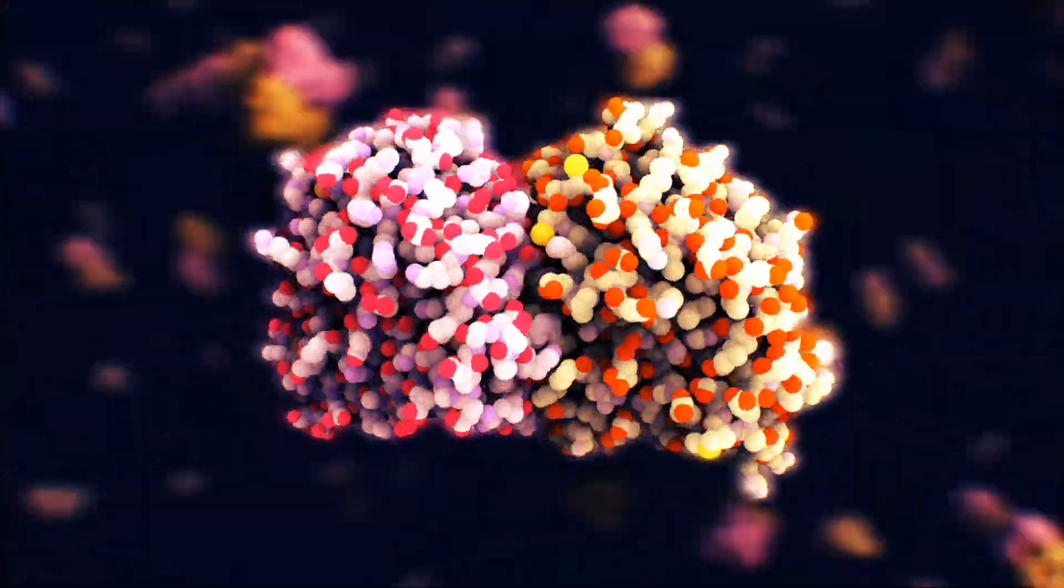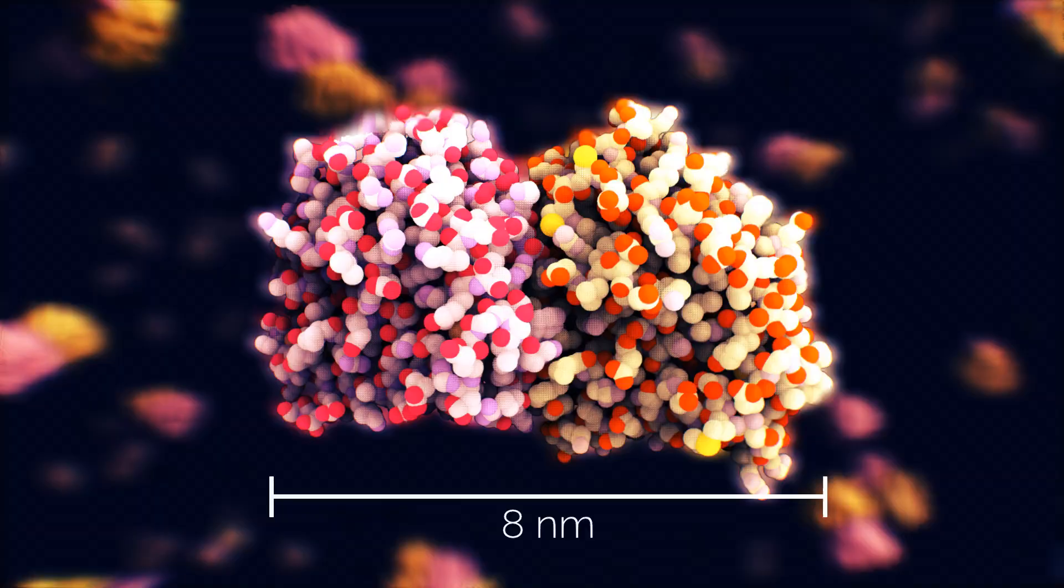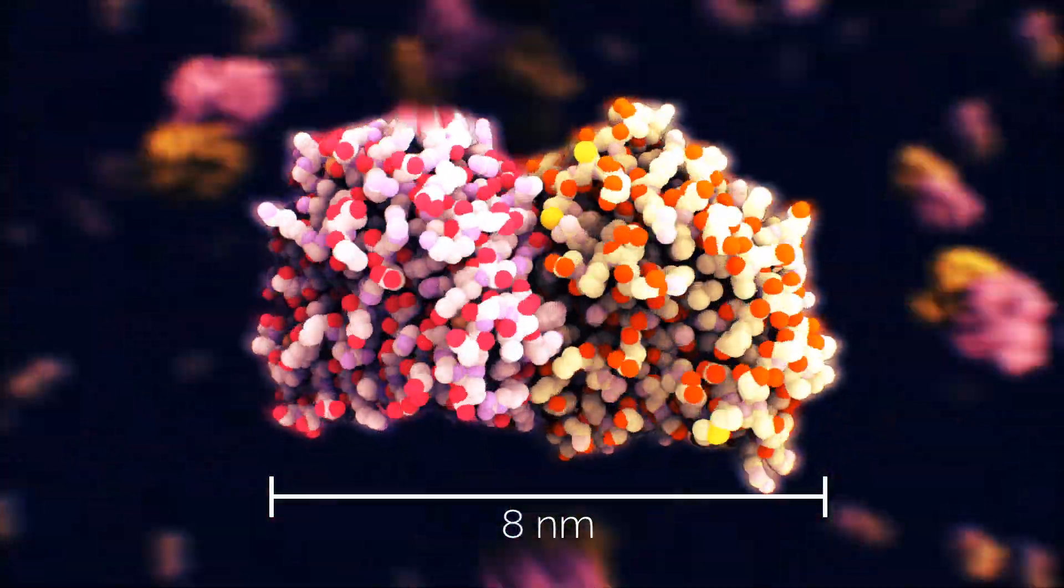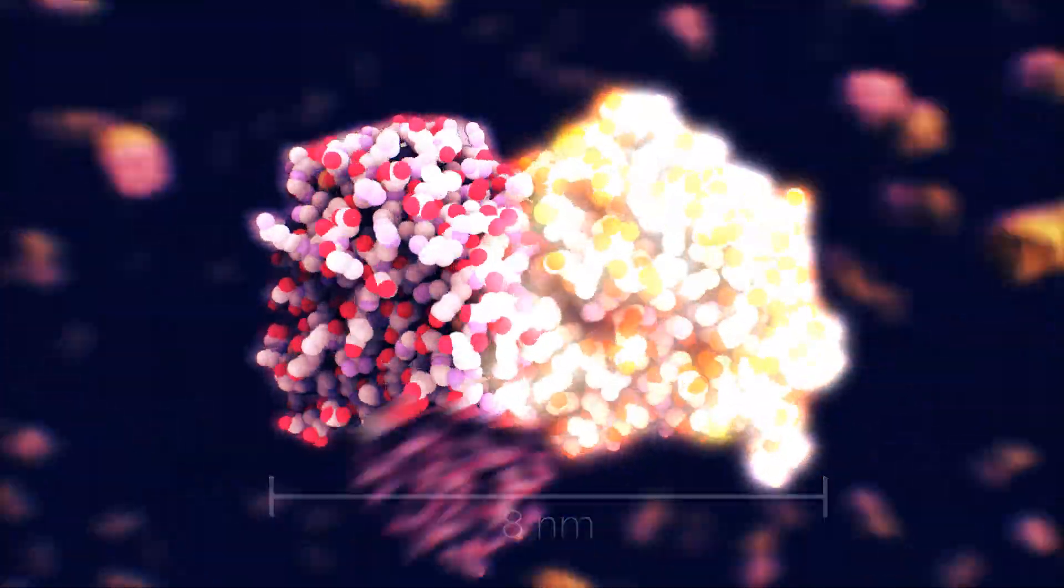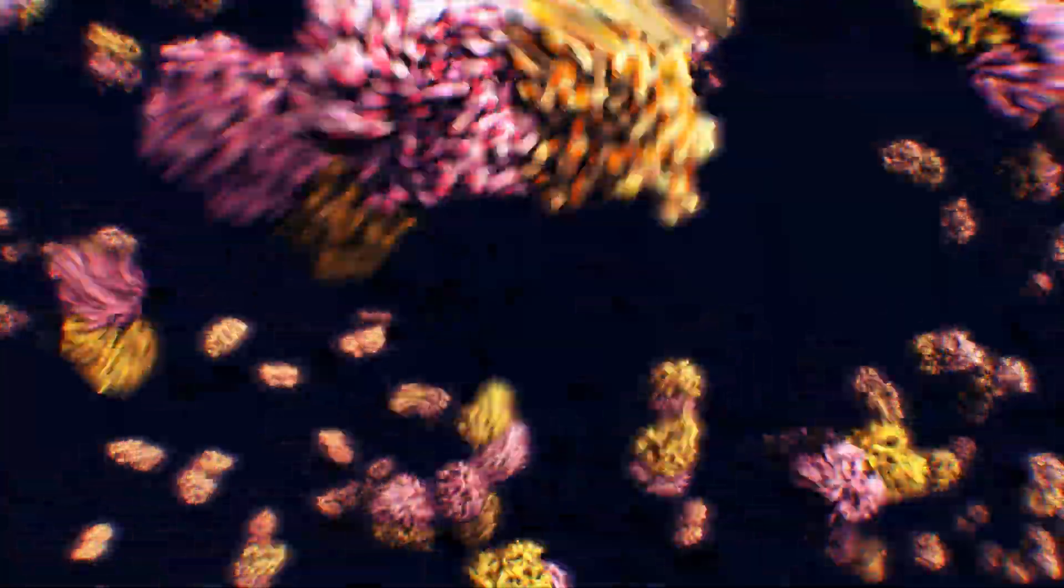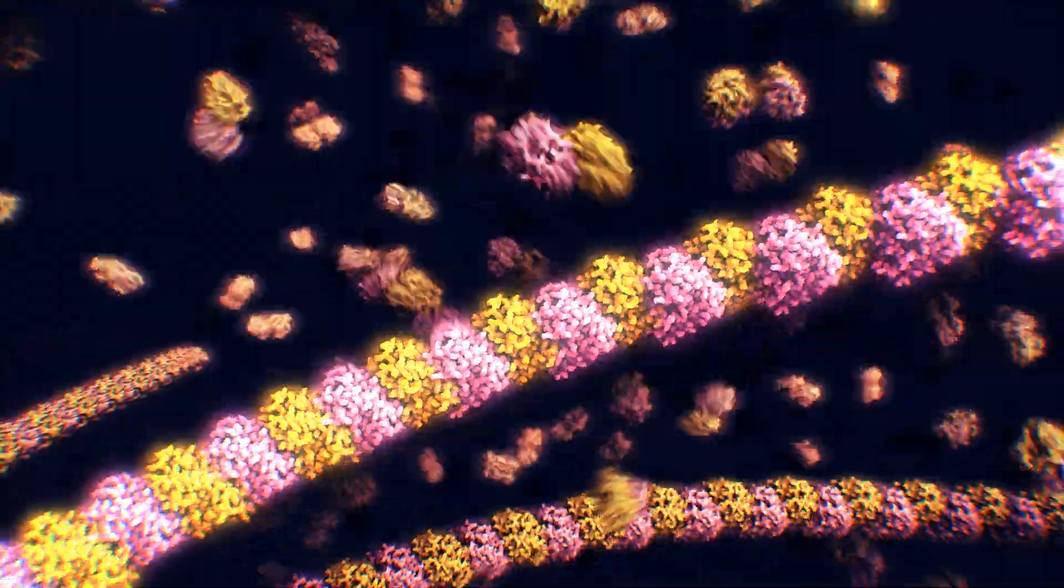This is tubulin, a protein consisting of two tightly bound molecules, alpha-tubulin and beta-tubulin. Scattered throughout the cell, the tubulin molecules naturally form long chains called protofilaments.